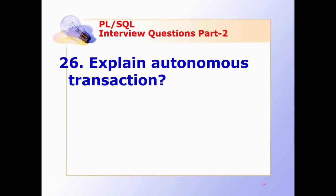Explain autonomous transaction. An autonomous transaction is an independent transaction from the main or parent transaction. It is not nested even if it is started by another transaction. There are several situations to use autonomous transactions, such as event logging and auditing.